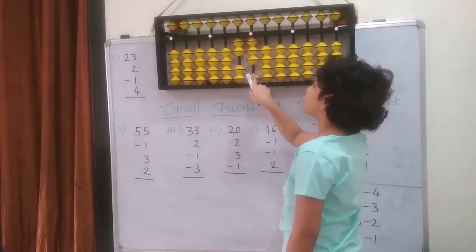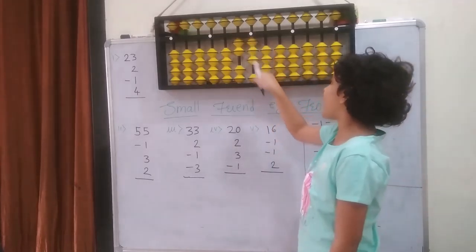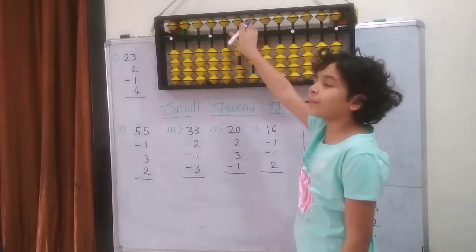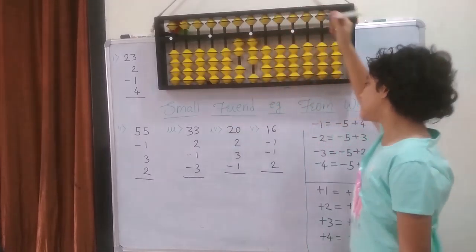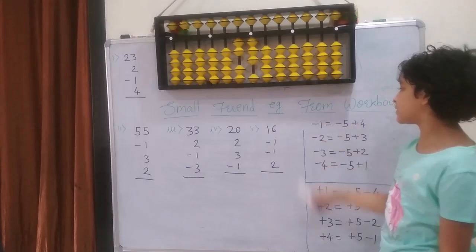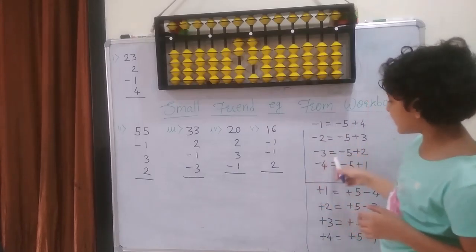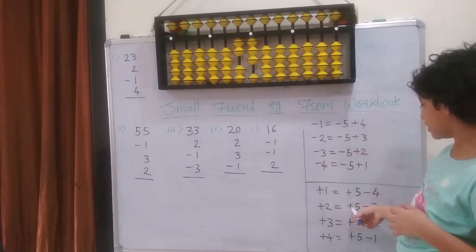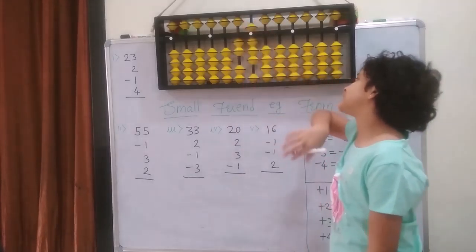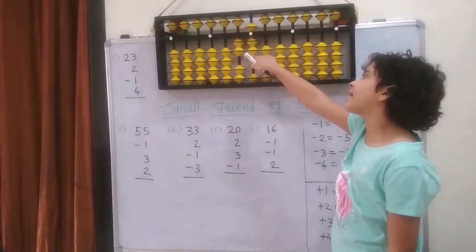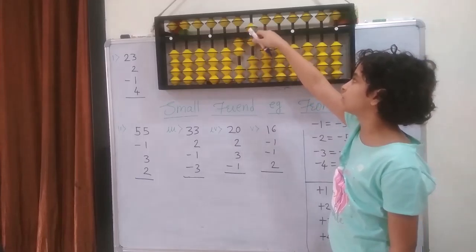I cannot because I don't have enough space. So I am going to see if the upper bead is available or not. This time it is available, means we can use the small friend formula. Which is plus 2 equals to plus 5 minus 3. So plus 5 and minus 3: 1, 2, 3.